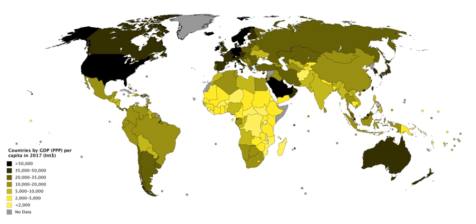Also in 2013, professors John Helliwell, Richard Layard, and Jeffrey Sachs published the World Happiness Report and proposed to measure other well-being indicators in addition to GDP. The evaluation framework included GDP per capita, GNI, life satisfaction, health, freedom of life choices, and trust and absence of corruption.